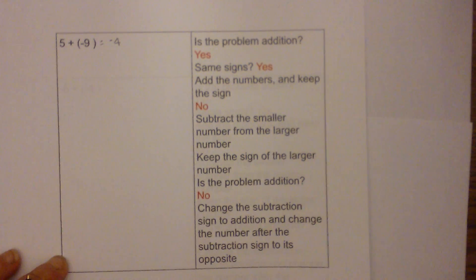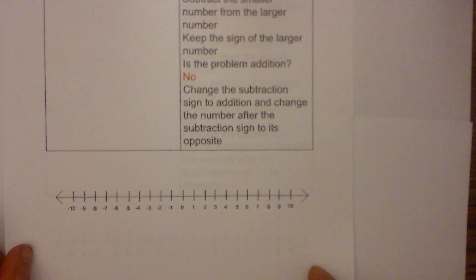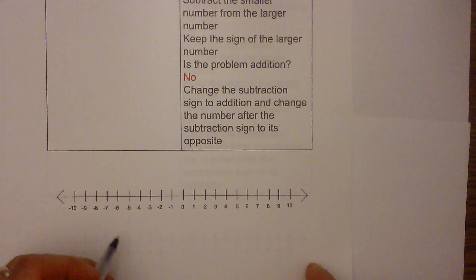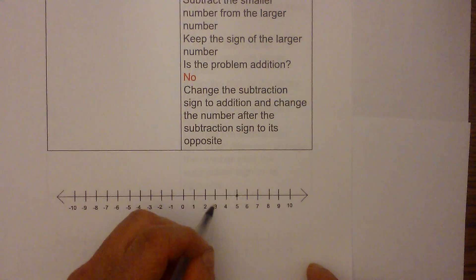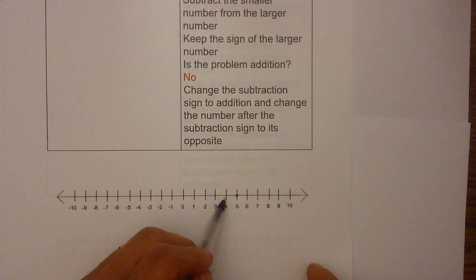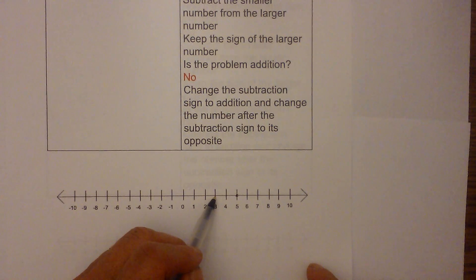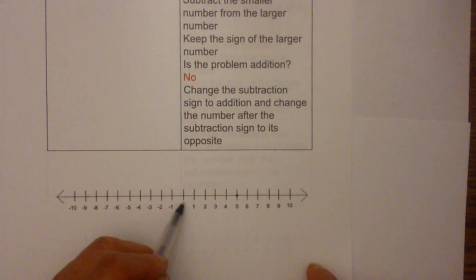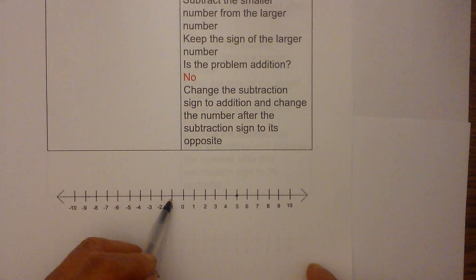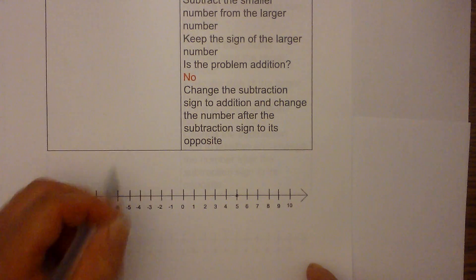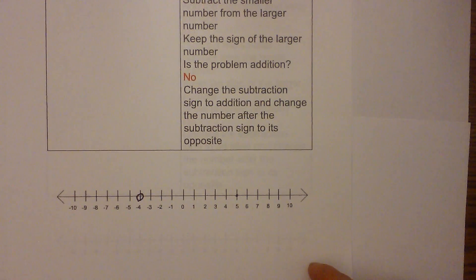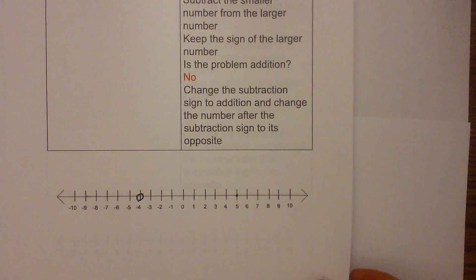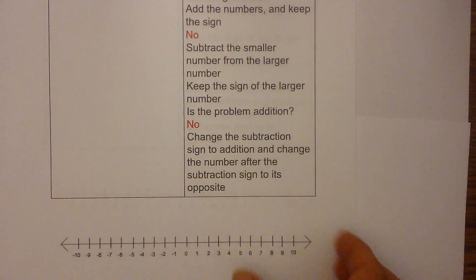Now let's do the exact same thing on the number line. We start at five and go nine places to the left — one, two, three, four, five, six, seven, eight, nine — which gets us to negative four.